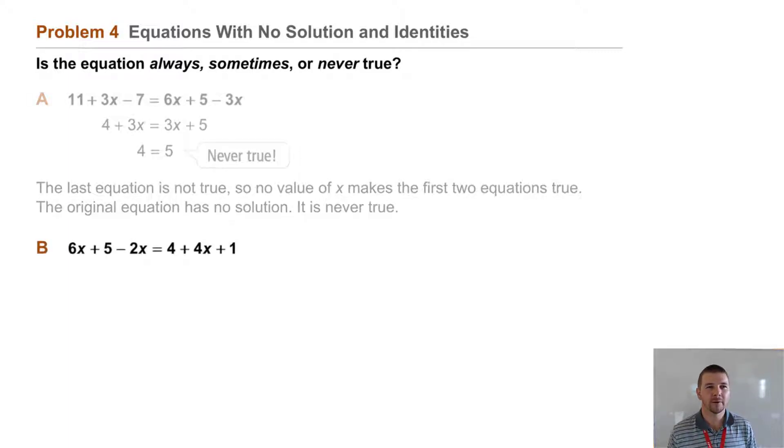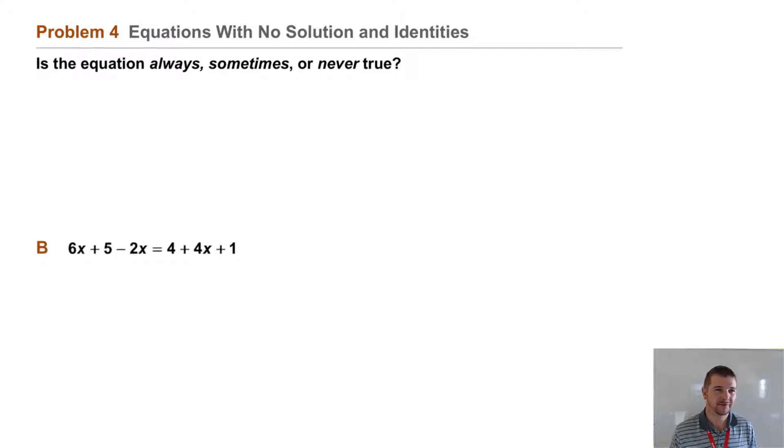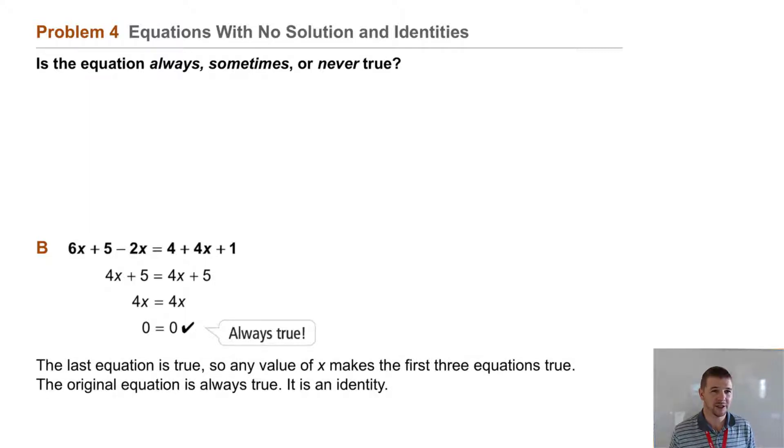Part B. What about 6x plus 5 minus 2x equals 4 plus 4x plus 1? Well, using inverse operations, we can reduce this to 0 equals 0 and that's always true. So any value of x makes the equations true. The original equation is always true. It's an identity.